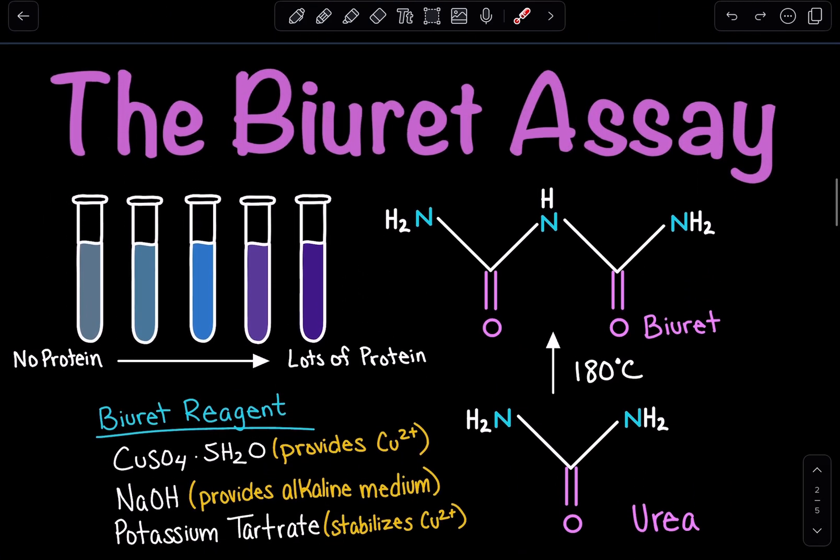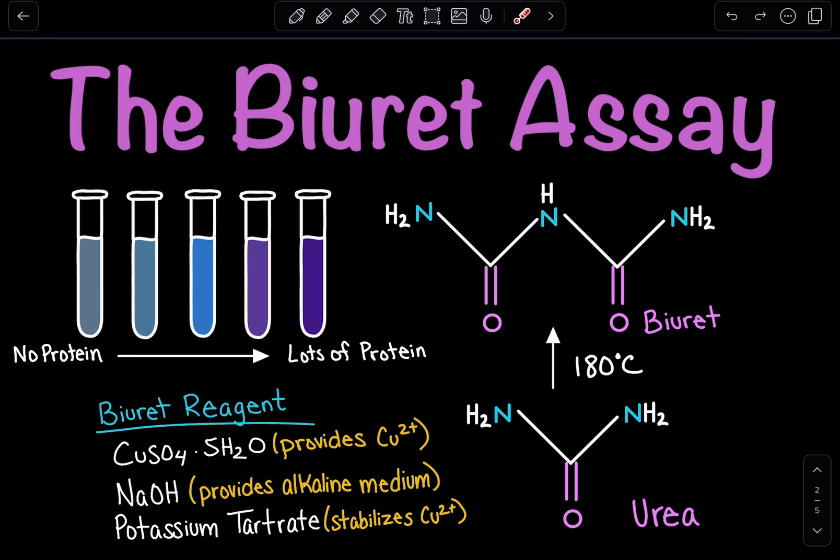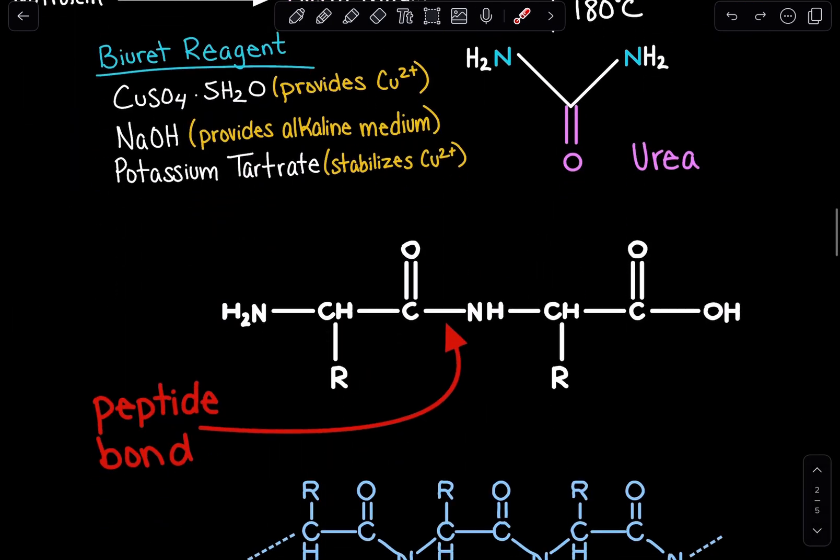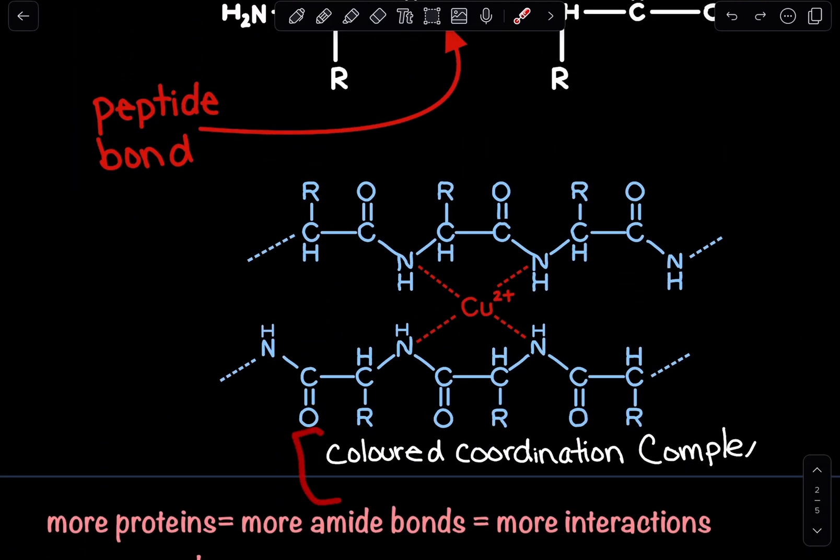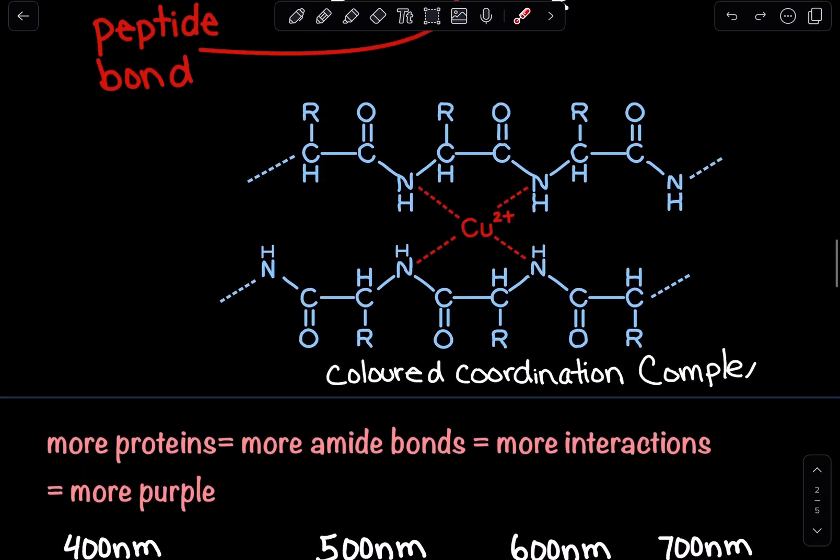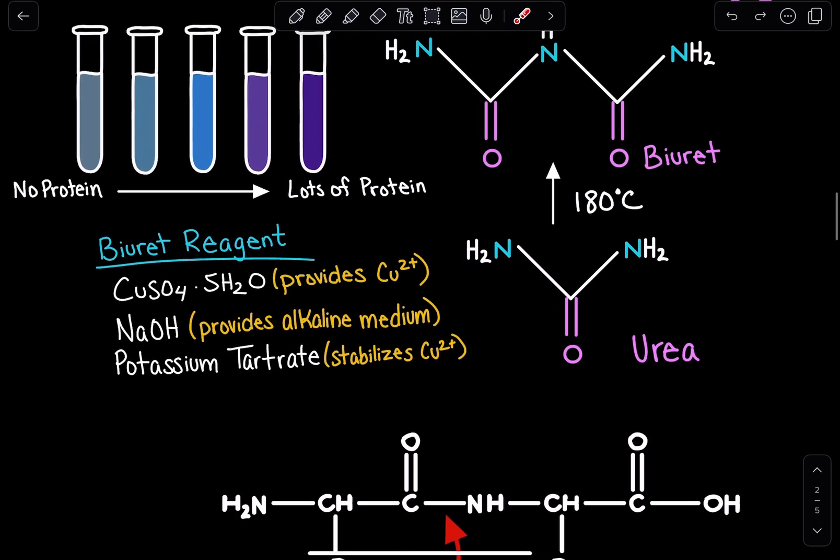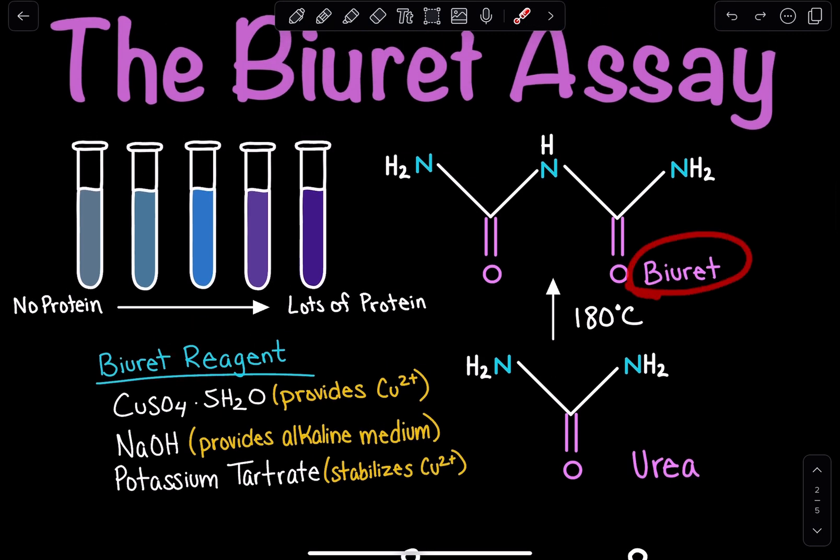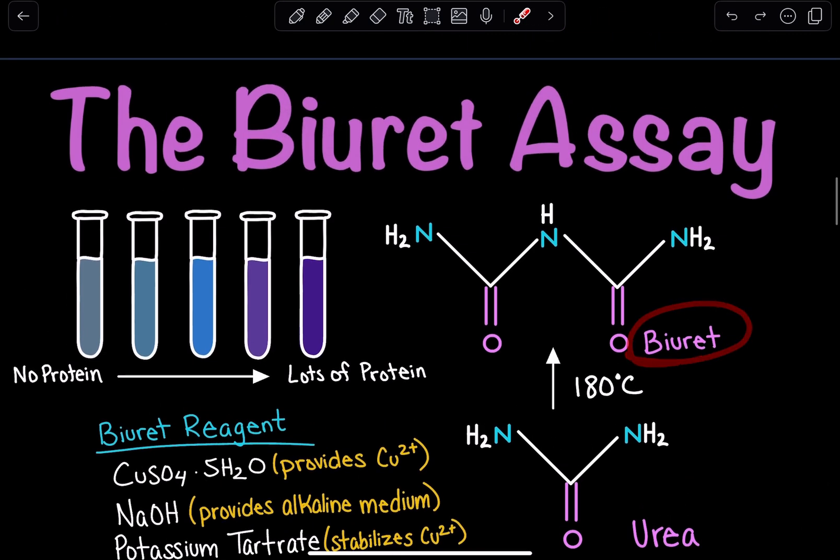And that is the Biuret assay. It is a way in which we can quantify proteins by utilizing a colored coordination complex, which absorbs light at 550 nanometers. The more proteins that we have, the more interactions we'll see, because the copper is interacting with the amide bonds. That is the insight that we gained from Biuret, and that is why it's called the Biuret assay.